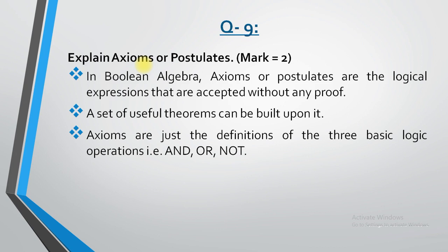There are 3 types of logic gates: number 1, basic logic gate; number 2, universal logic gate; and number 3, exclusive logic gate. Basic logic gates are AND, OR, and NOT. So you can use axioms with these basic logic gates.